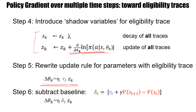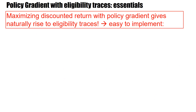We can also subtract the baseline, and then instead of the raw reward we get the TD delta: the difference between the reward and the baseline, which is the difference between the value at state S and gamma times the value at state S_{t+1}. Eligibility traces appear naturally in policy gradient methods — it's just a smart rewrite, a smart reordering of terms. Maximizing the discounted return with policy gradient gives natural rise to eligibility traces.